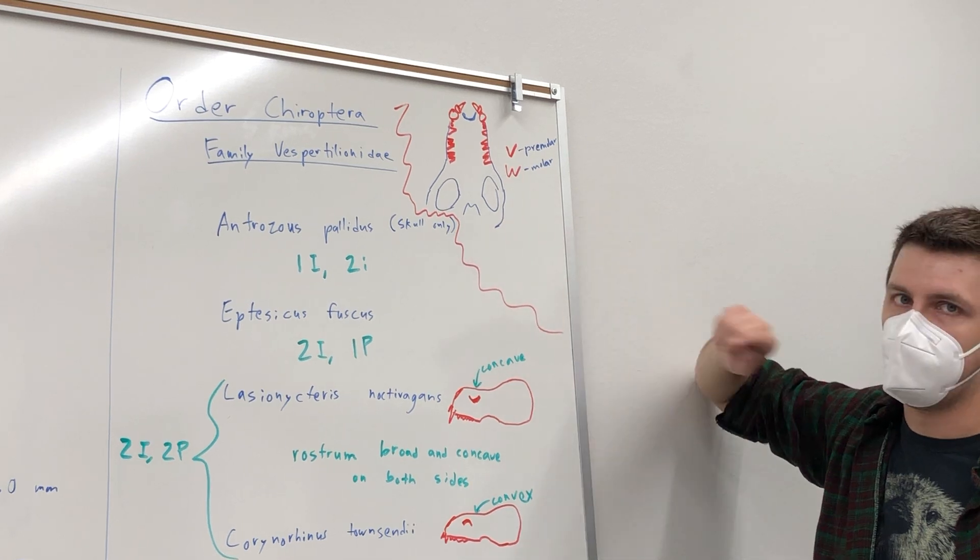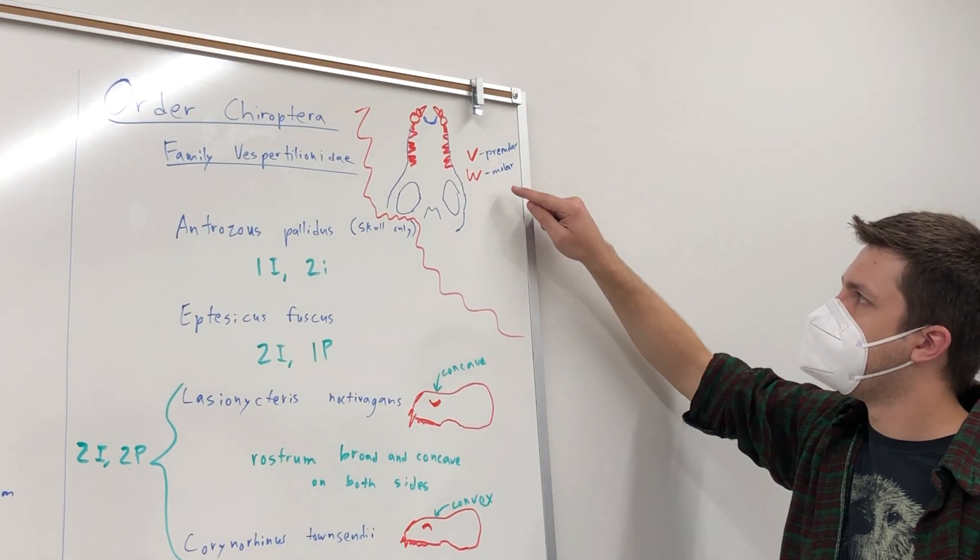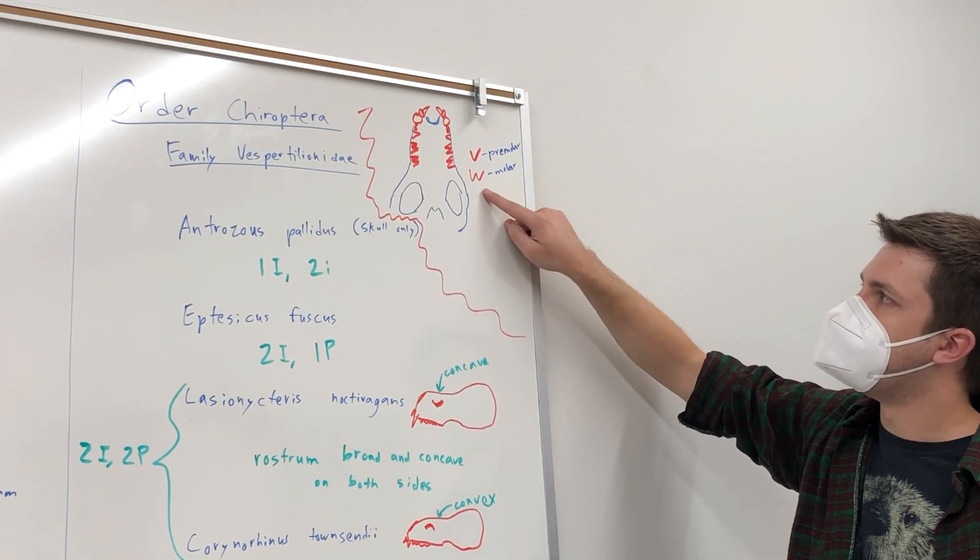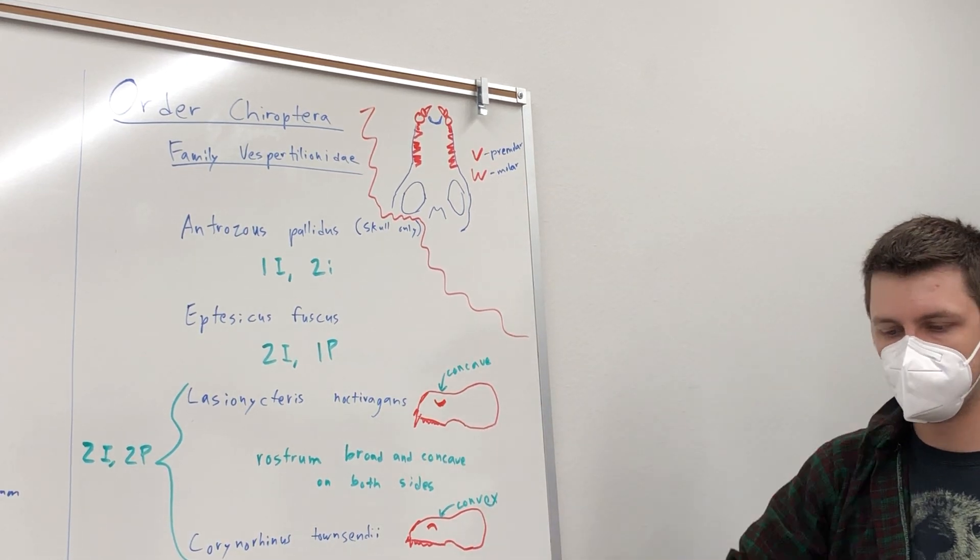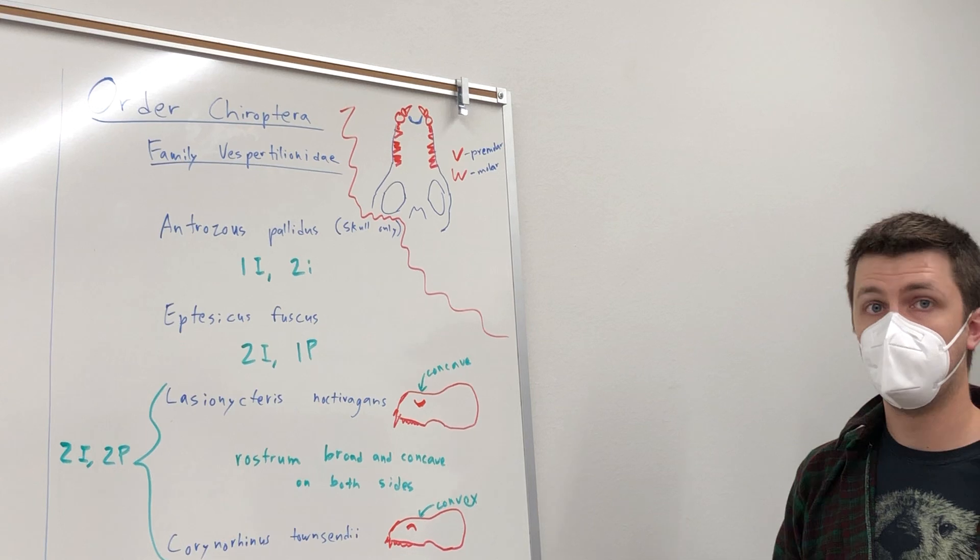And then also, another thing distinctive about the bats we have here, they have these W-shaped molars. So the cusp on top of the molar looking straight down is a zigzag like a W.